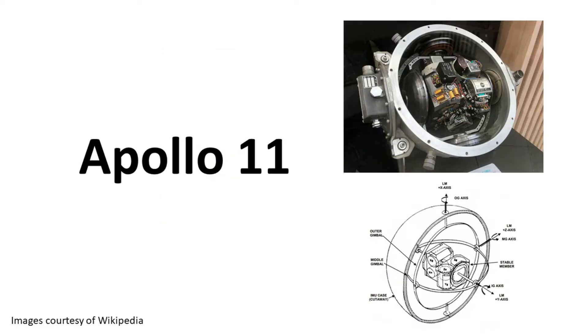Anyways, gimbal lock would inevitably happen, and to fix it they had to manually realign the rings using the stars. Not fun. So how can we get around this issue? The answer? Quaternions.